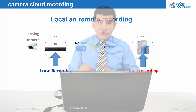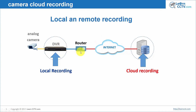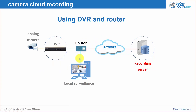Back here to the diagram. If you want to have local access to your system you just need to have a computer. I'm going to install a software on this computer, and with this software I can see the image from the camera live and also see the images that are recorded on my DVR. The same way I can see what's recorded on my remote server on the internet.